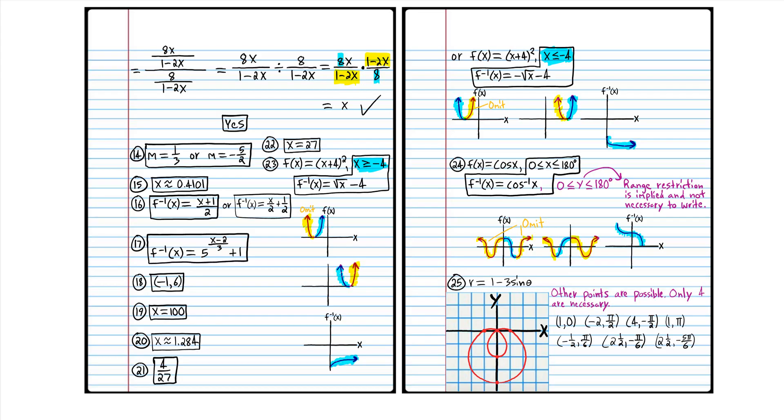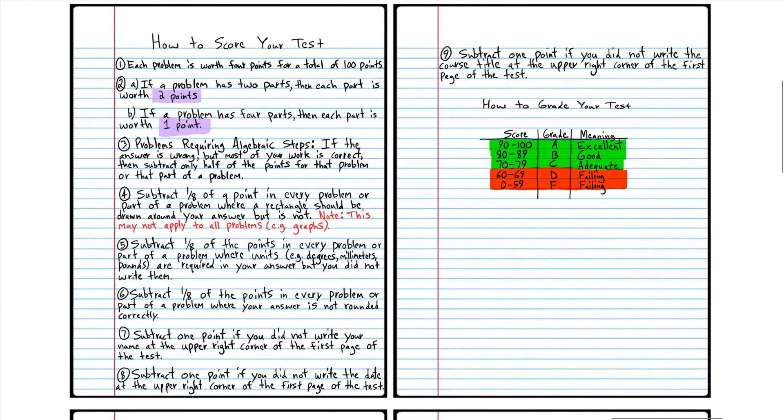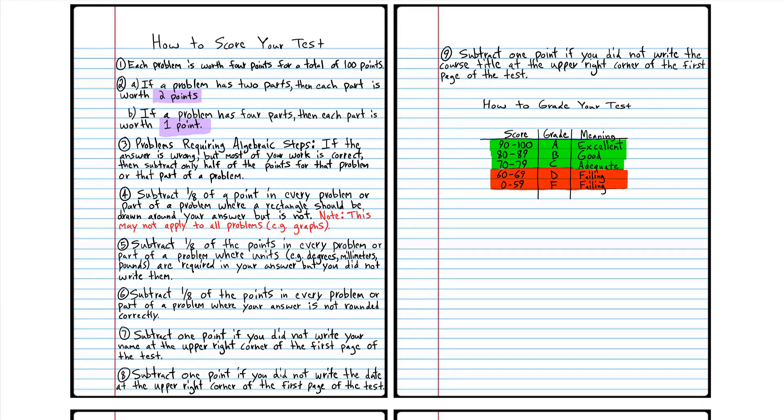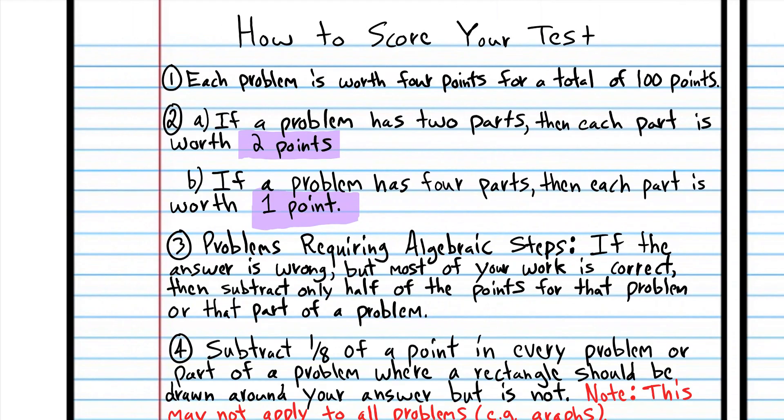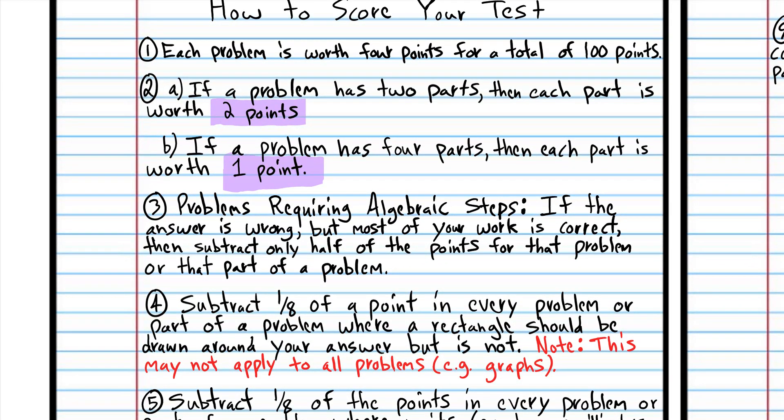So now we're going to talk about how to score your test. I'm just going to give you a few guidelines. If you're at this point in the course you know kind of how it works. Every problem is worth four points, and if you have a problem that has two parts, obviously each part would be worth two points. If you have a problem with one part, then obviously that problem is worth four points. But if you have a problem that has four parts, each part is worth one point.